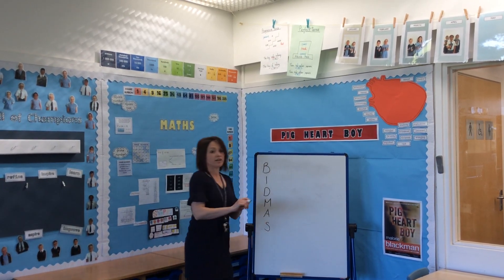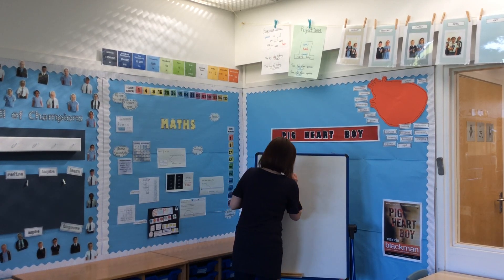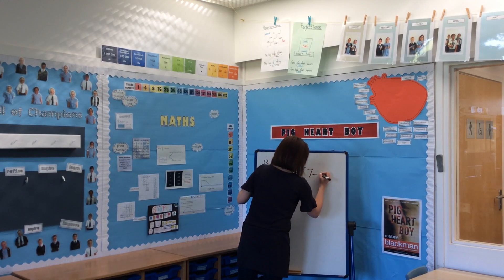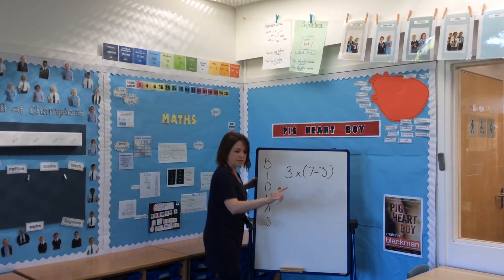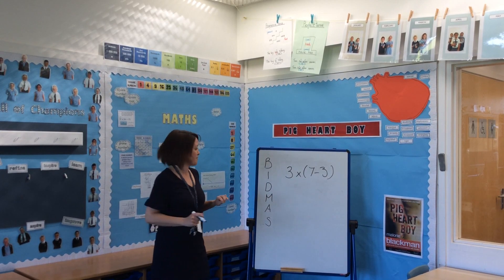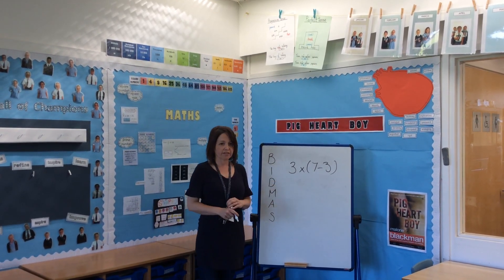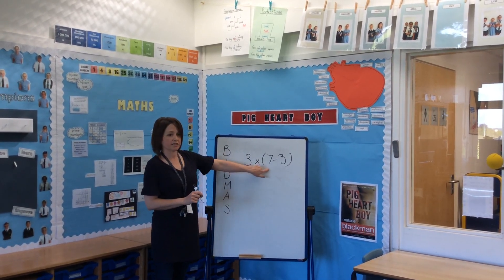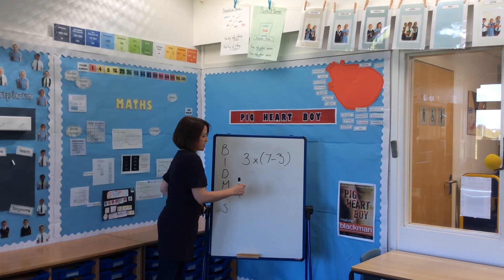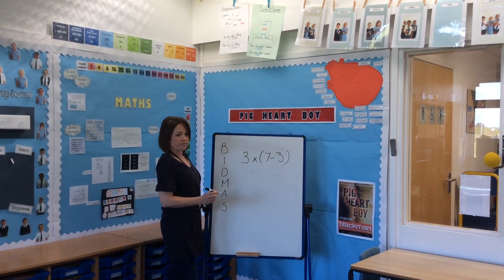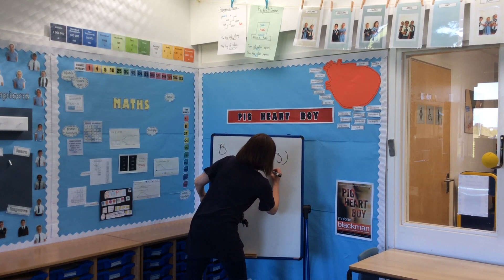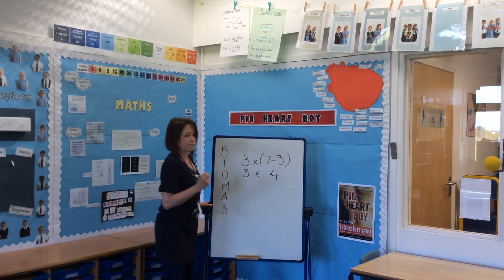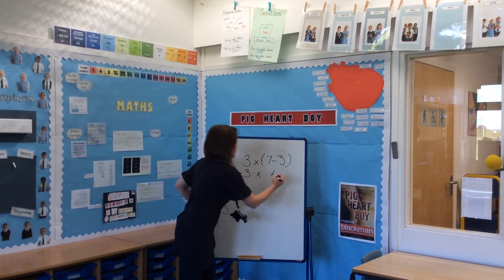The first calculation we're going to try together is a nice straightforward one. It's 3 multiplied by (7 take away 3). So straight away, the B stands for brackets, and I can see the brackets here. I work out 7 take away 3, which is 4. Then I rewrite the calculation: 3 multiplied by 4, which equals 12.